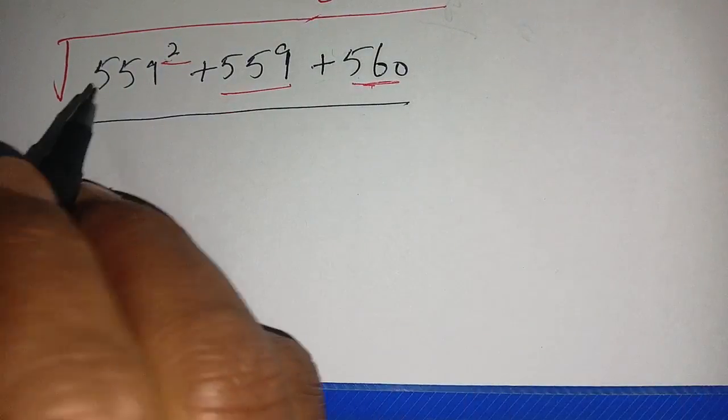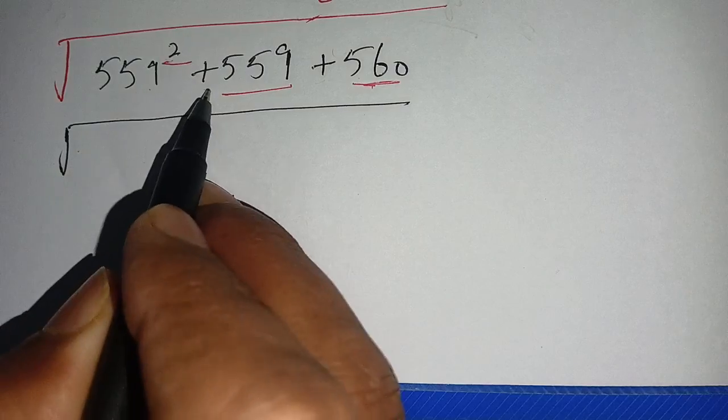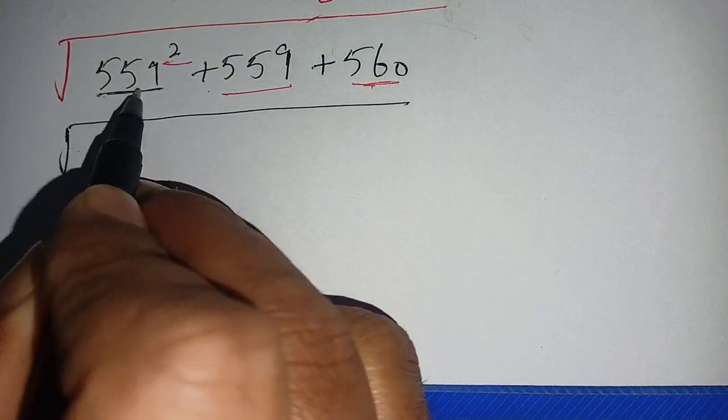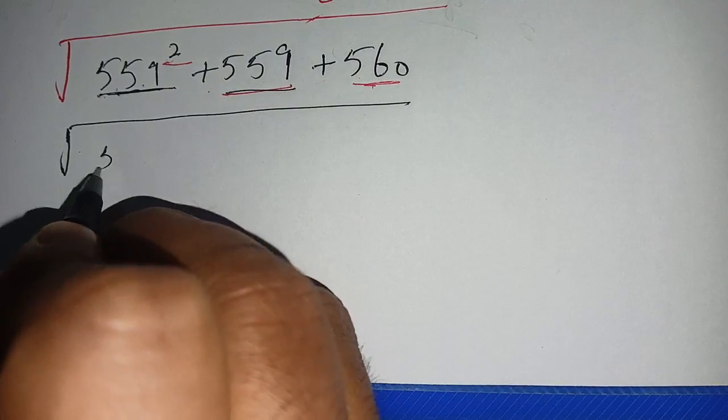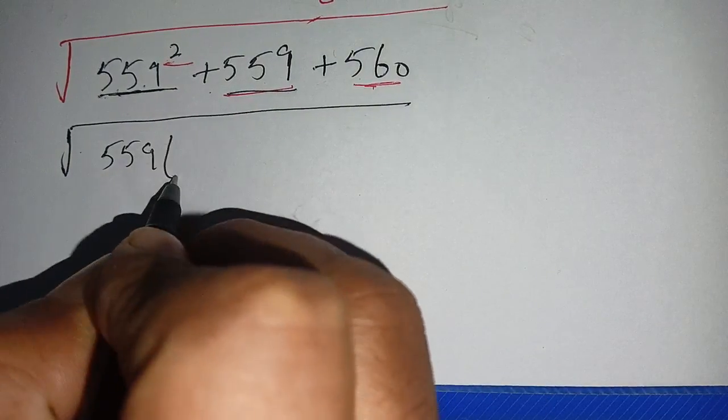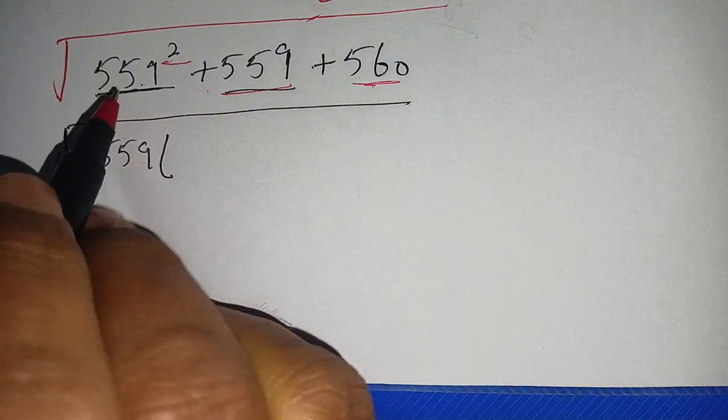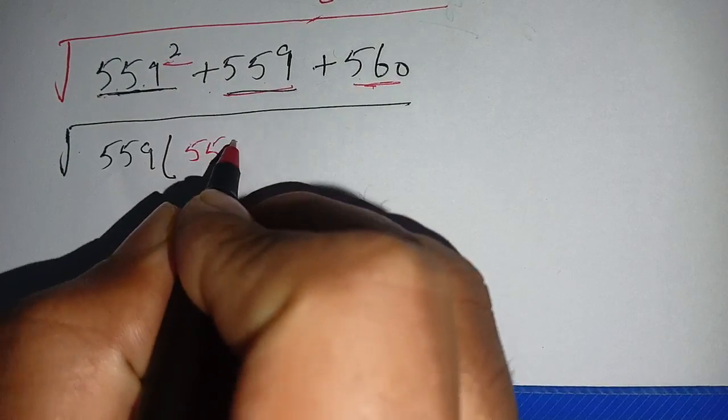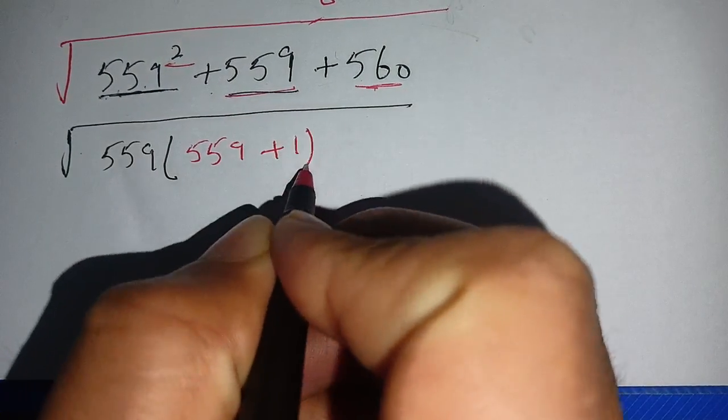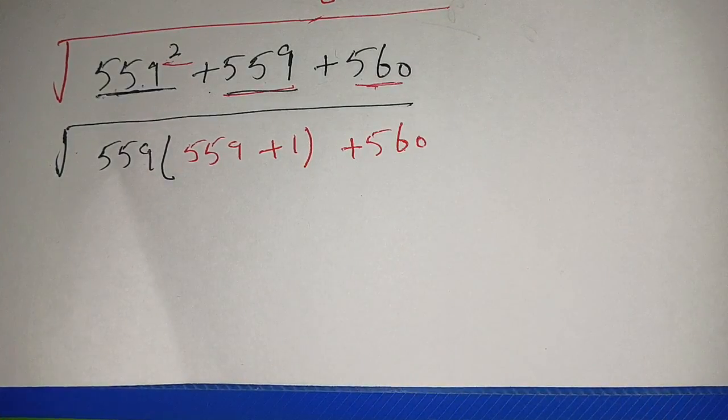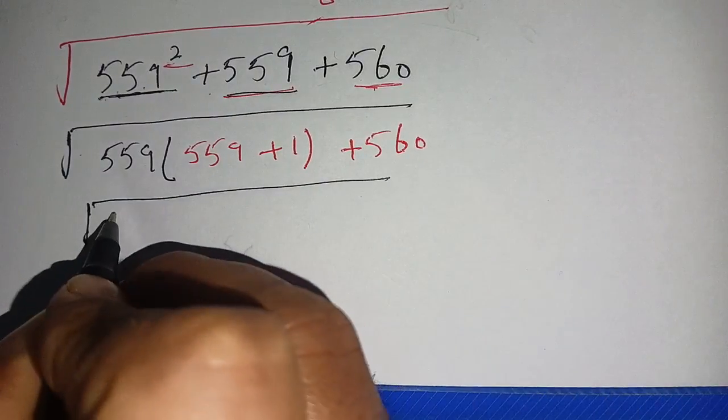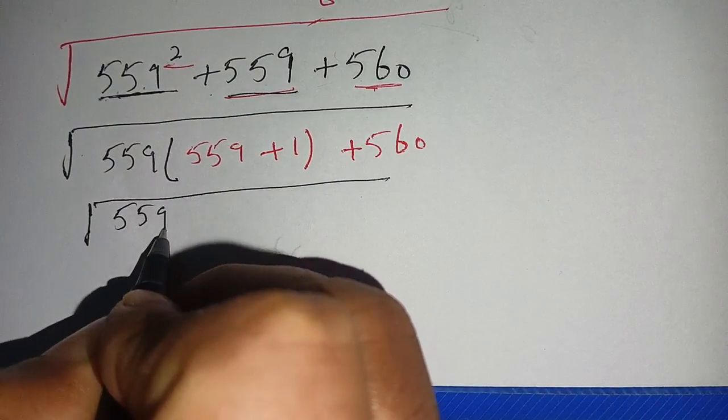Let us solve this. We can write this as square root of 559 squared plus 559. When we take one 559 from this term and this term, we get 559 times, remaining is 559 plus 1, plus 560.